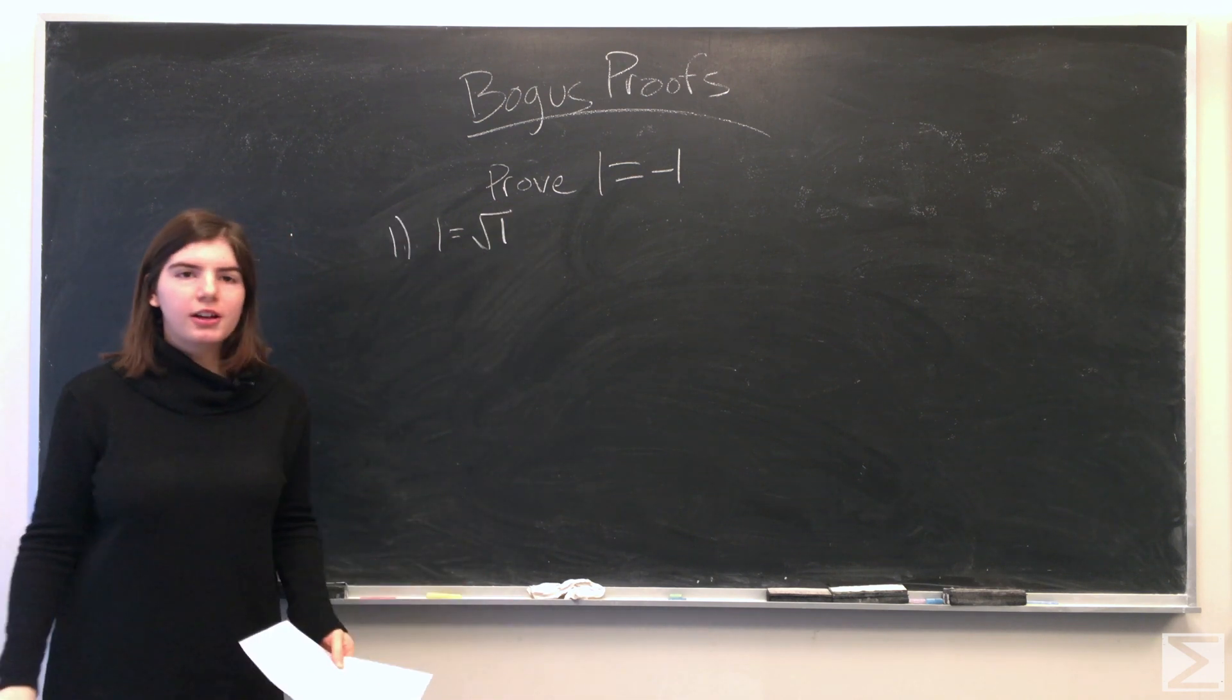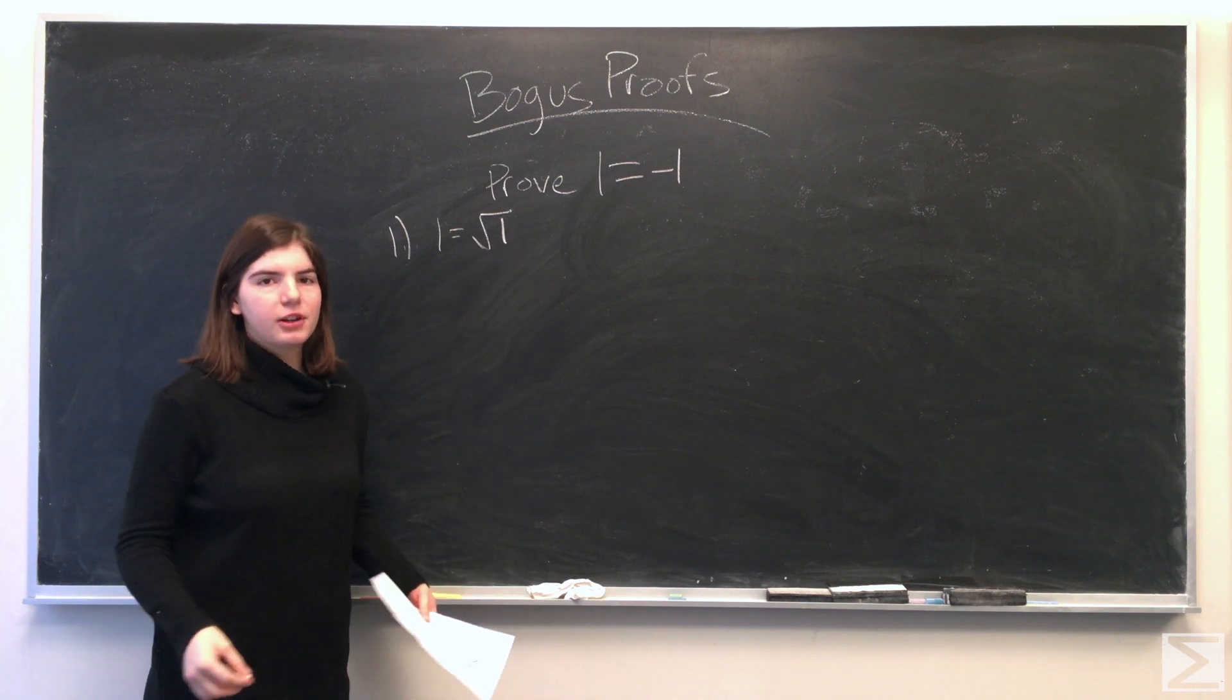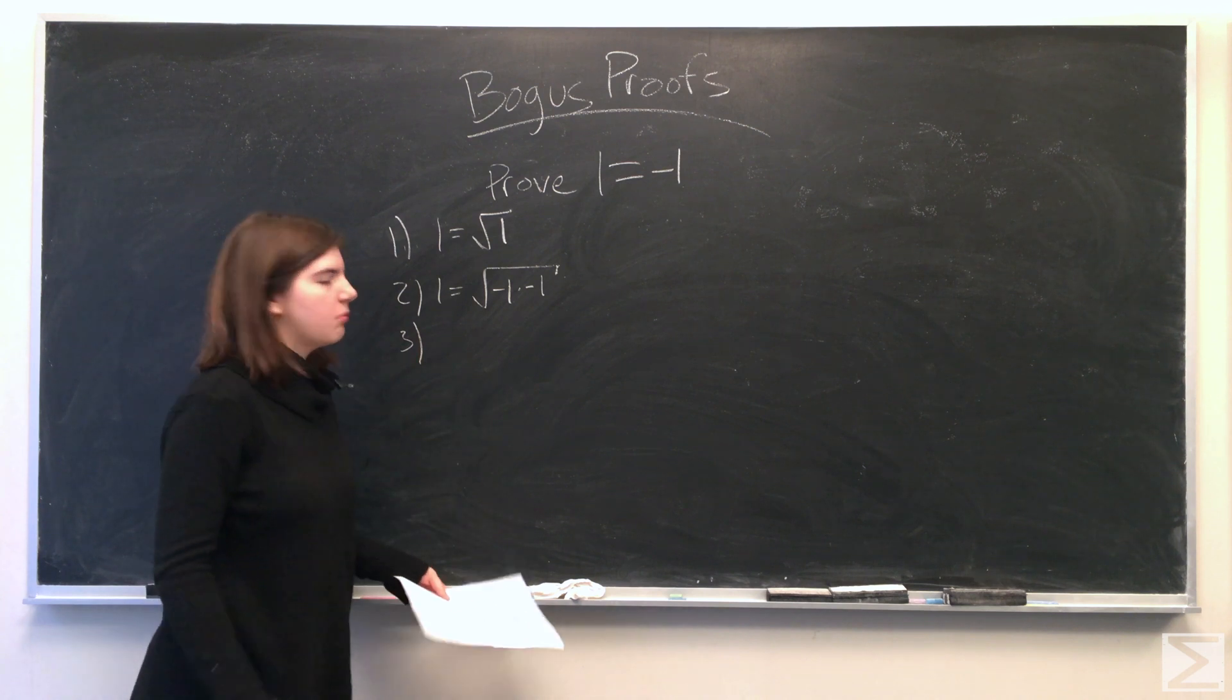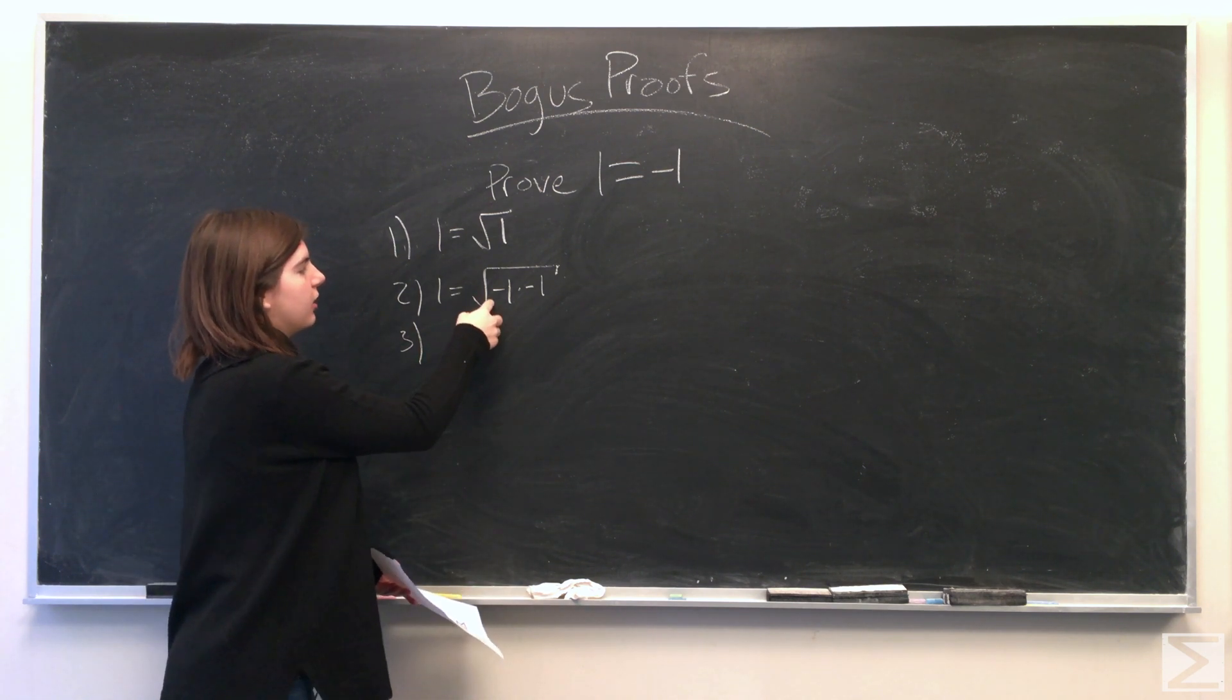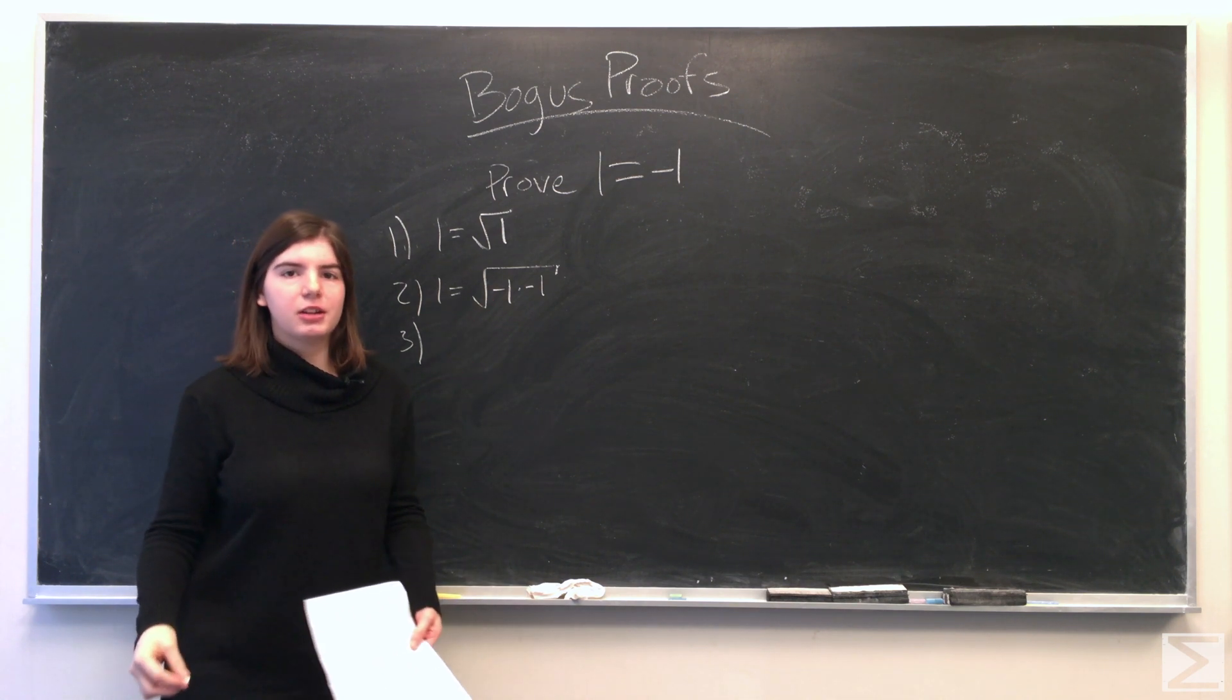So we know that 1 is equal to the square root of 1, and we can rewrite 1 as negative 1 times negative 1. And by the product property of square roots, we can rewrite this as the square root of negative 1 times the square root of negative 1.